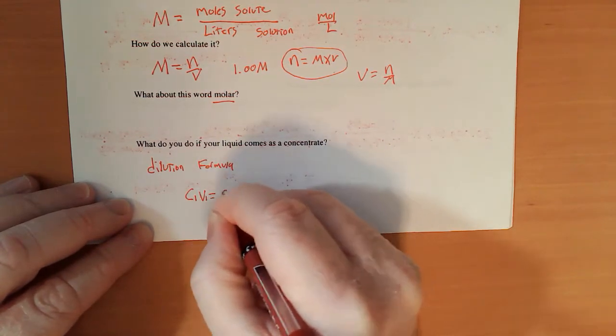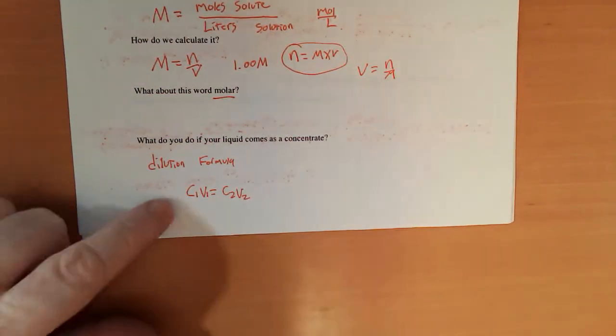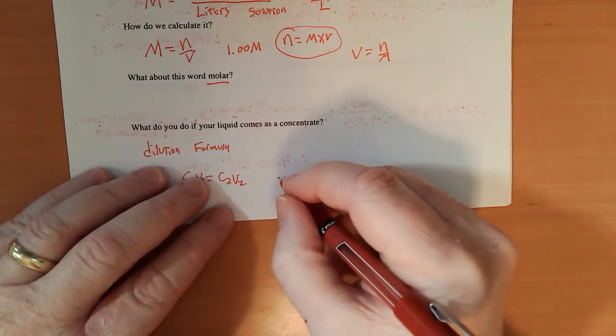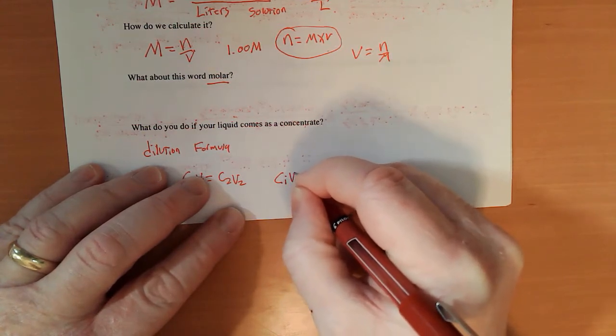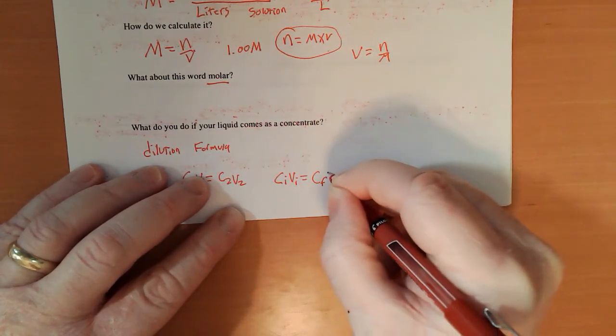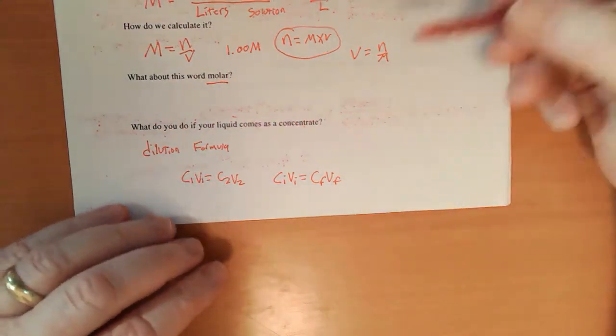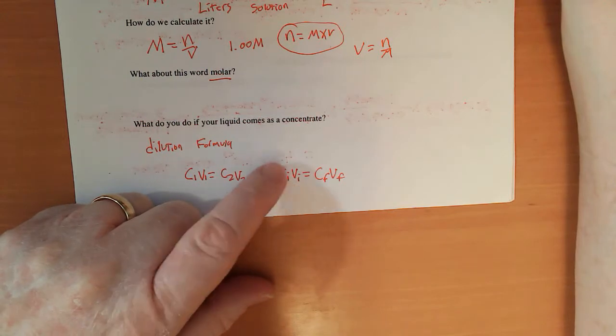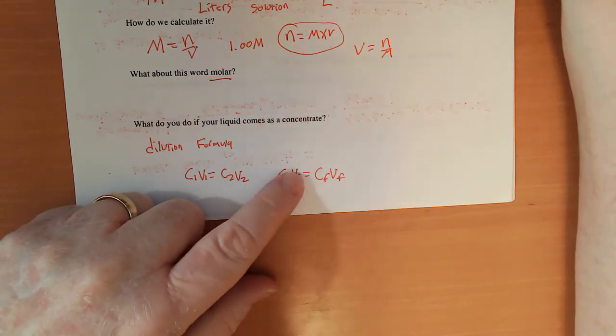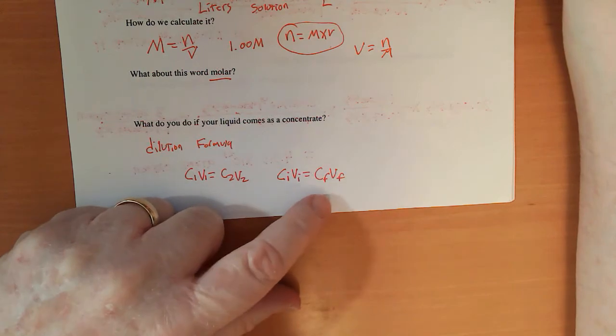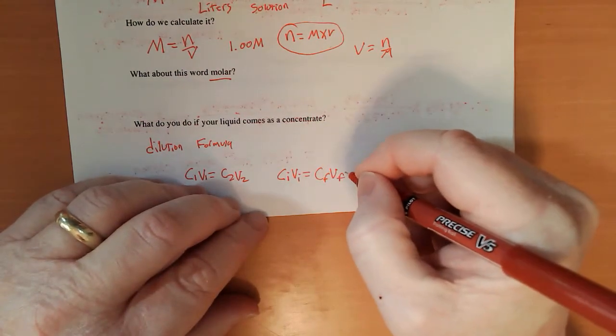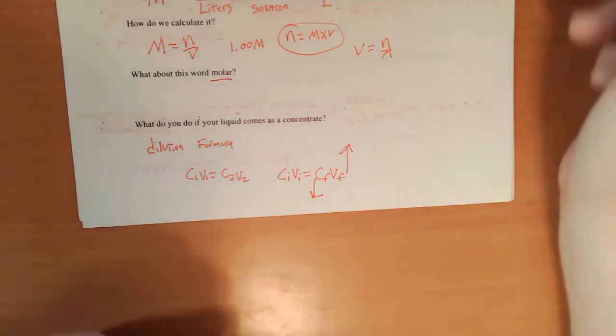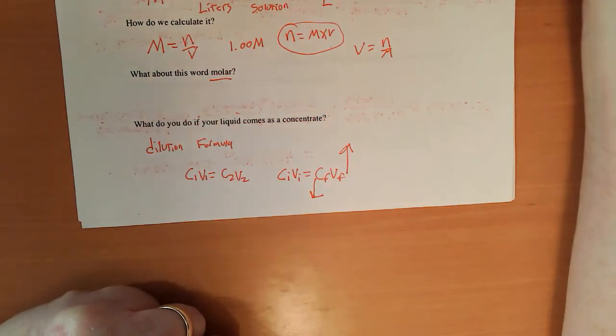So C1V1 equals C2V2. C for concentration, V for volume. Now the way I was taught it, a little bit different: CIVI equals CFVF. I for initial and F for final. So the concentration times the volume of the original equals the concentration times the volume of the final. And what will happen here is that when you're diluting it, the volume is going to go up, so the concentration is going to go down.